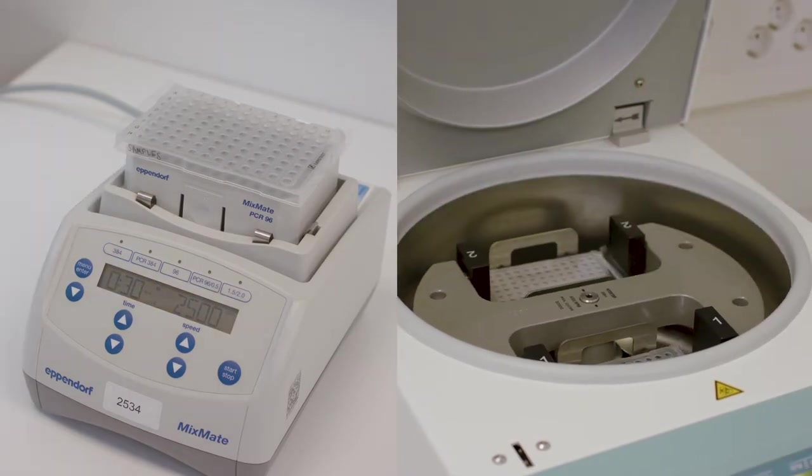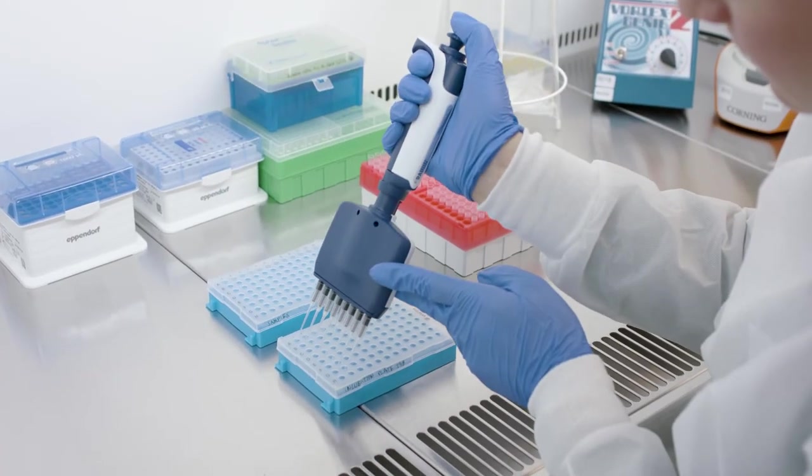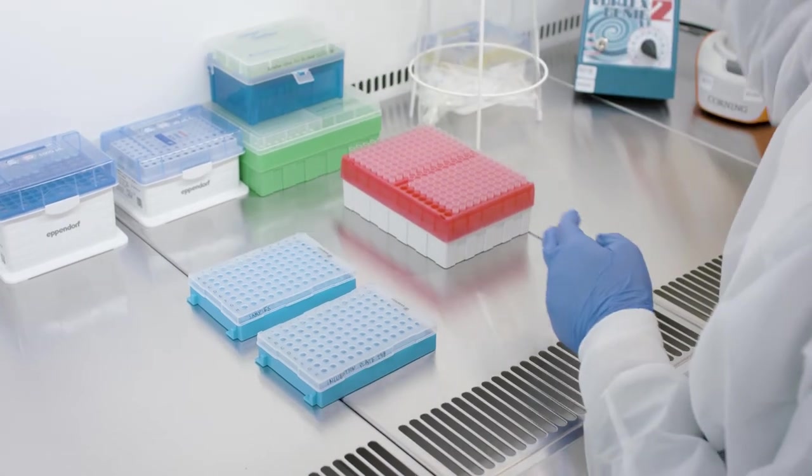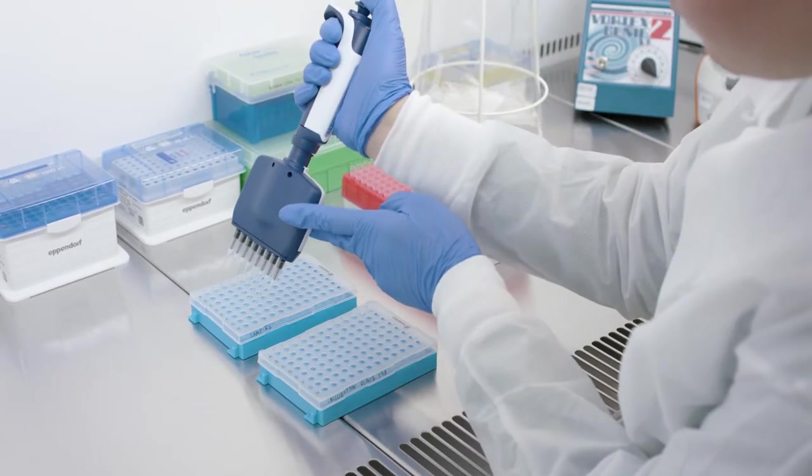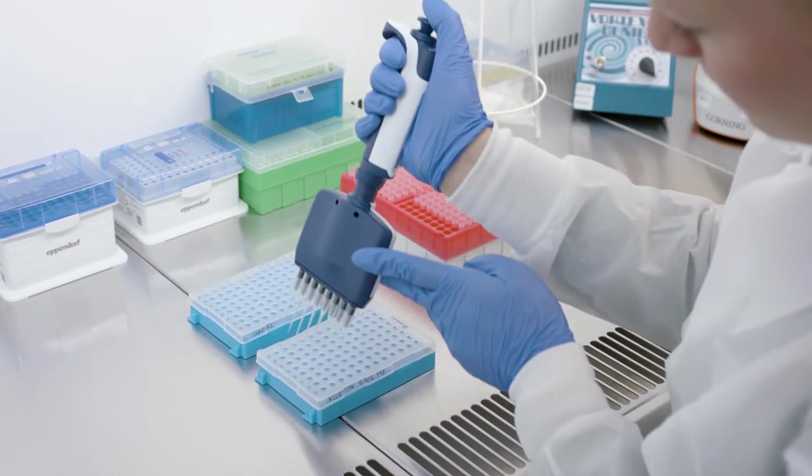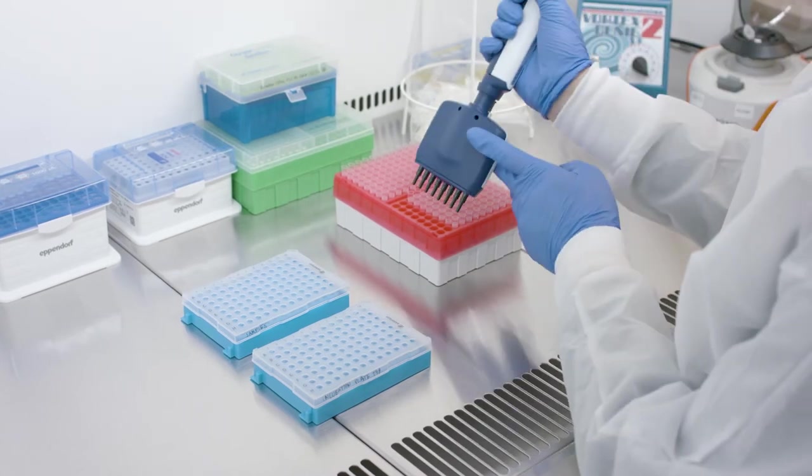Vortex the samples and spin them down. Transfer 1 microliters of each sample to the bottom of each well of columns one to five of the incubation plate according to your sample plate layout, using a multi-channel pipette and forward pipetting. Make sure to change tips between the columns.